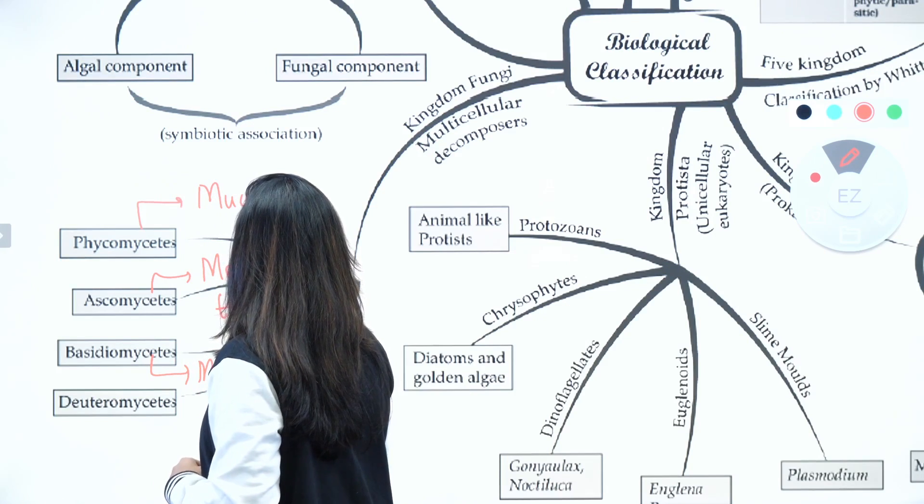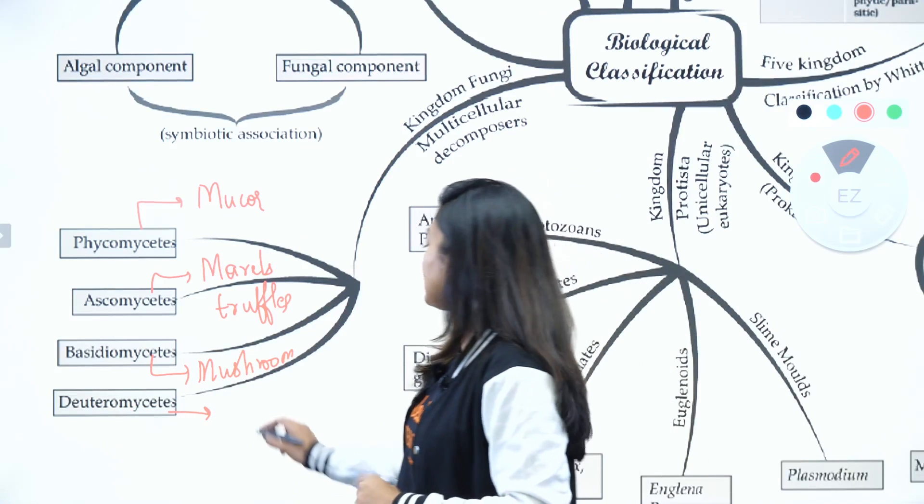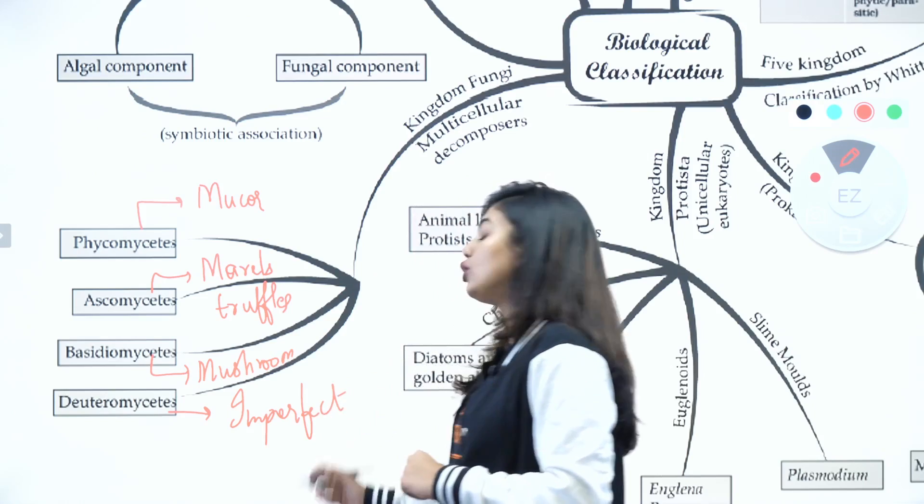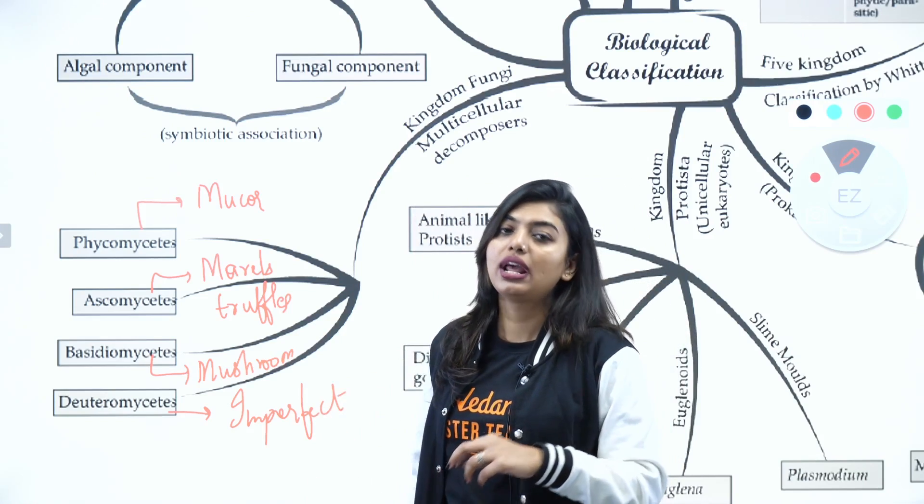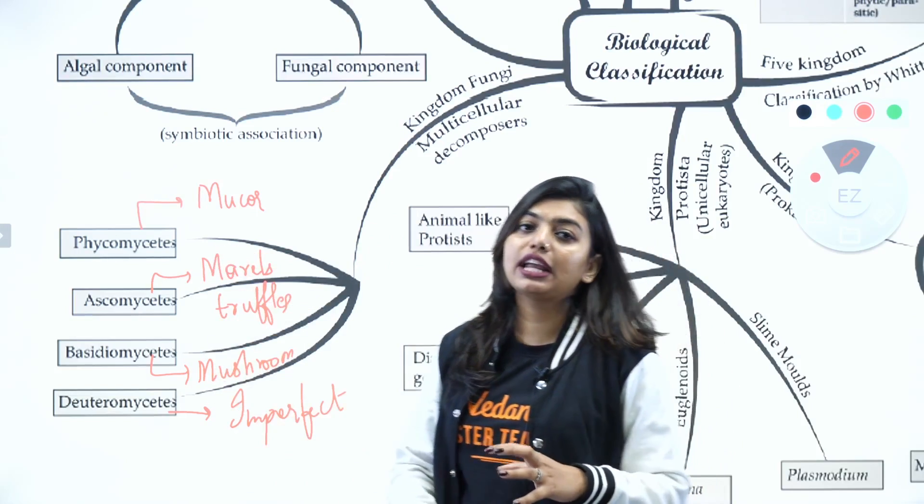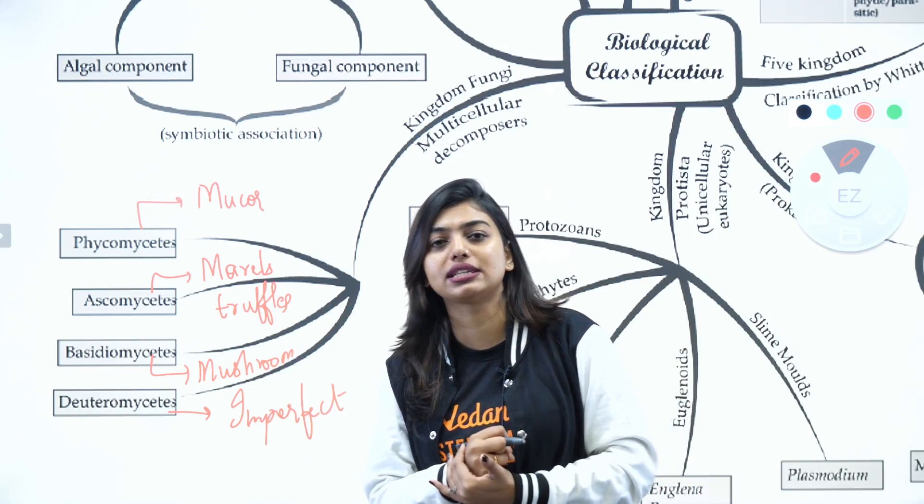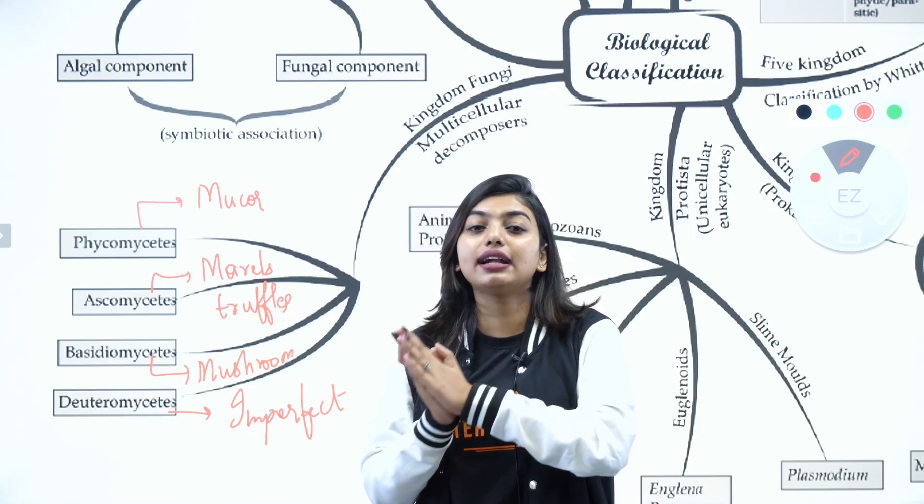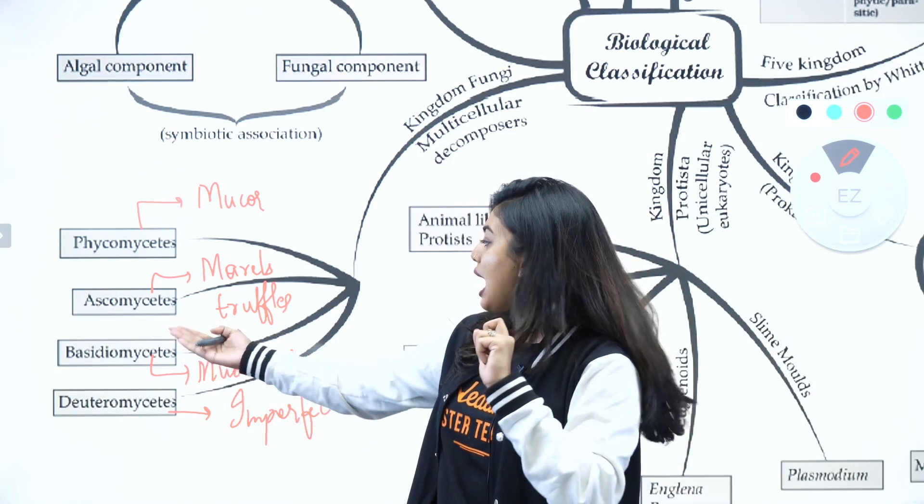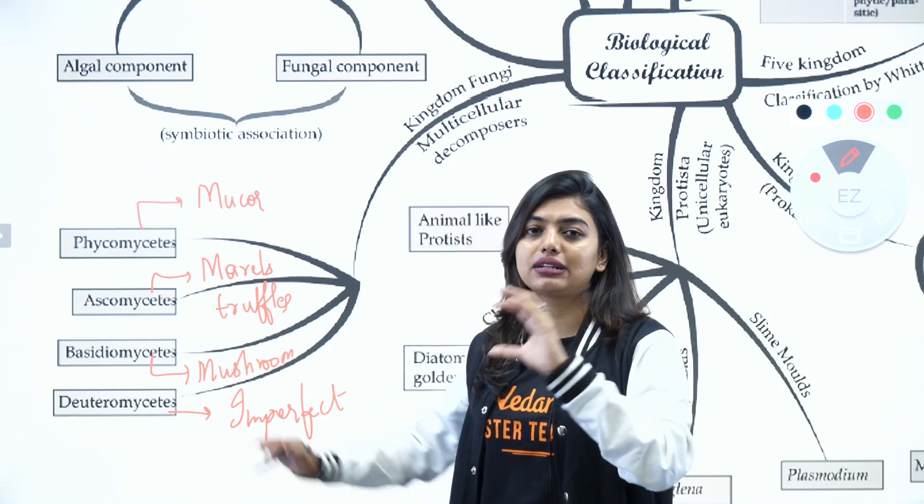The most important thing is about Deuteromycetes - it is an imperfect fungi. This is called an imperfect fungi because their sexual phase is still not known, only asexual phase is known, and this gave a lot of confusion while categorizing fungi. Now these people can do sexual reproduction with the help of plasmogamy, karyogamy, and meiosis. Other than that, they can also reproduce with the help of asexual spores - that is your zoospores, conidiospores, ascospores, basidiospores.